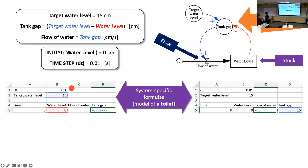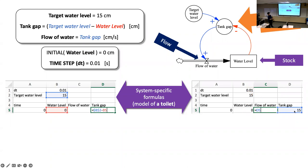Any questions about either of these two formulas — the flow of water or the tank gap? Initially the tank gap is going to be 15, because that's 15 minus the initial water level of zero, giving an initial gap of 15.